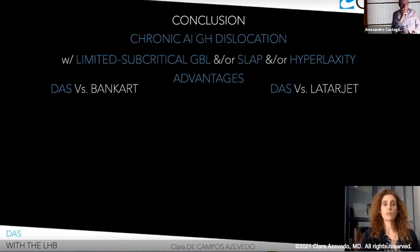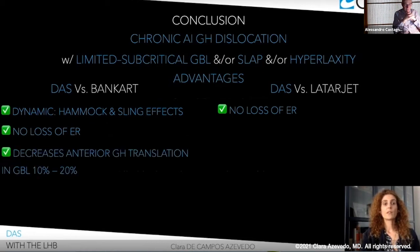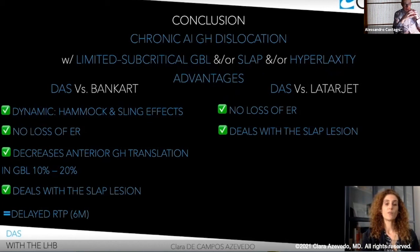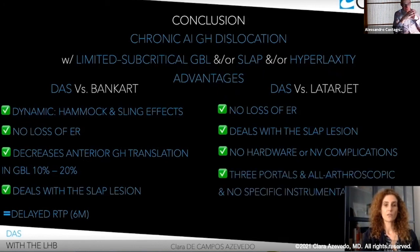What are the advantages of DASH versus Bankart and versus Latarjet? Versus Bankart, dynamic anterior stabilization produces a hammock and sling effect as in Latarjet, with apparently no loss of external rotation based on clinical and biomechanical results. Compared with Bankart, it decreases anterior glenoid remote translation in subcritical glenoid bone loss from 10% to 20%, and it addresses the SLAP lesion by tenotomizing the long head of the biceps to the anterior inferior glenoid rim. Versus both Bankart and Latarjet, it does have a delayed return to play — not before six months — but there are no hardware or neurovascular complications, no risk to the musculocutaneous nerve, and only three portals are required with no need for specific instrumentation.